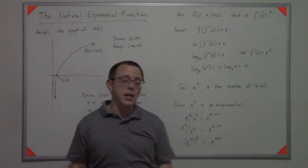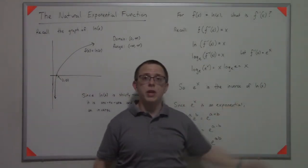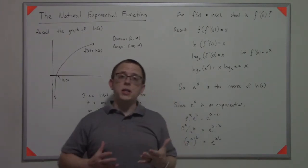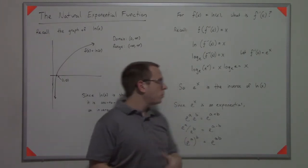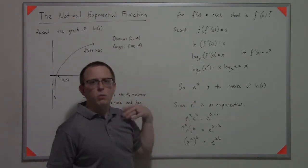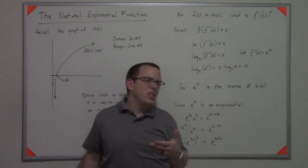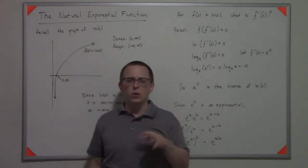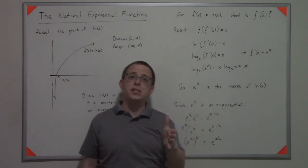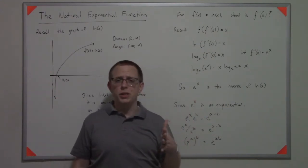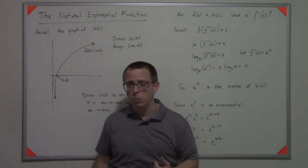Basically what that's saying is that e to the x is the inverse of the natural log, which is a really nice consequence because you have a positive number, and we haven't discussed this, but it's like 2.71828 or something, and then some change. It's a transcendental number, which means not only is it irrational, but it has some additional properties as well.